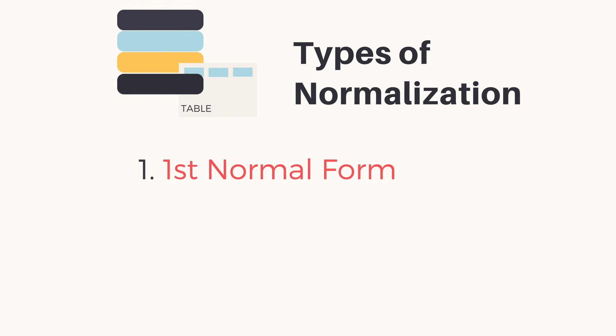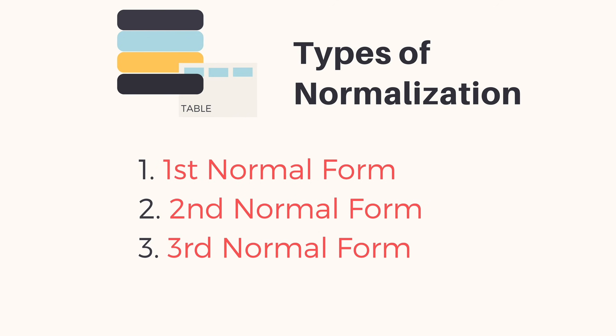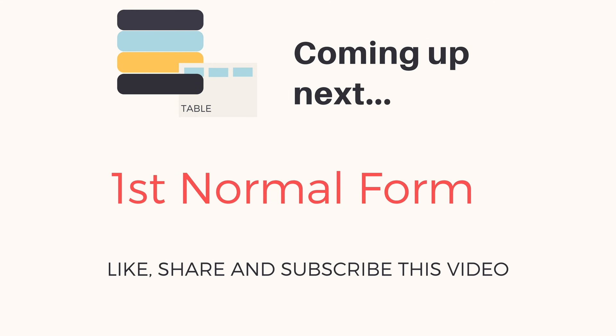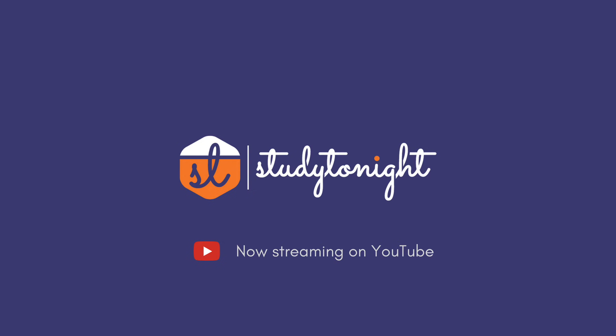Normalization can be achieved in multiple ways. We have three basic normal forms: first normal form, second normal form, and third normal form, and another more advanced technique known as BCNF. We will learn about all the normal forms in our coming videos, so stay tuned and do subscribe to the Study Tonight channel.